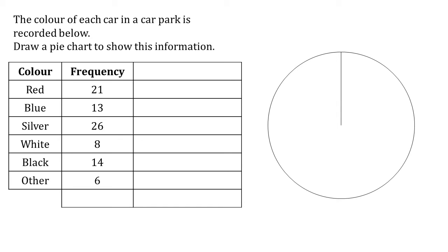Let's try a slightly trickier one now. In this one, the colour of each car in a car park is recorded in a table and we want to draw a pie chart. The first thing to do is to find the total frequency — the total number of cars in our data. Adding the frequencies together: 21, 13, 26, 8, 14 and 6, that equals 88.